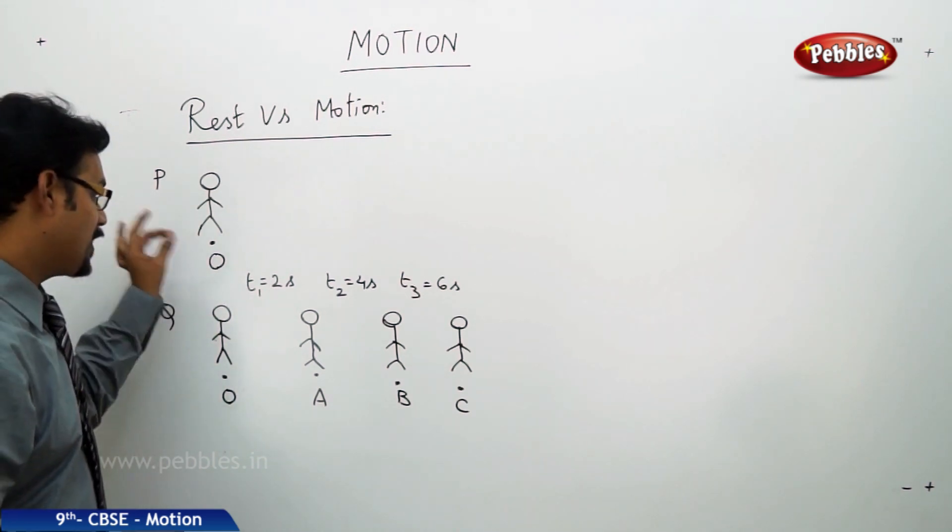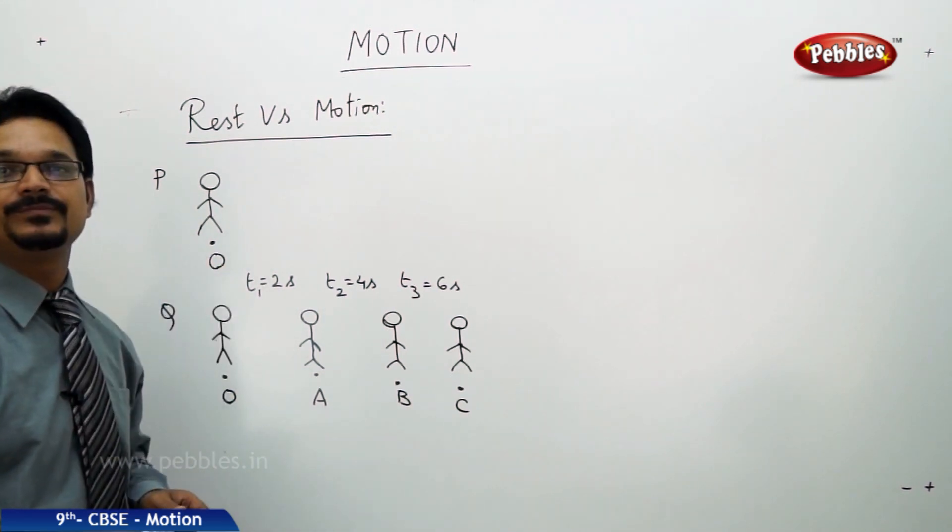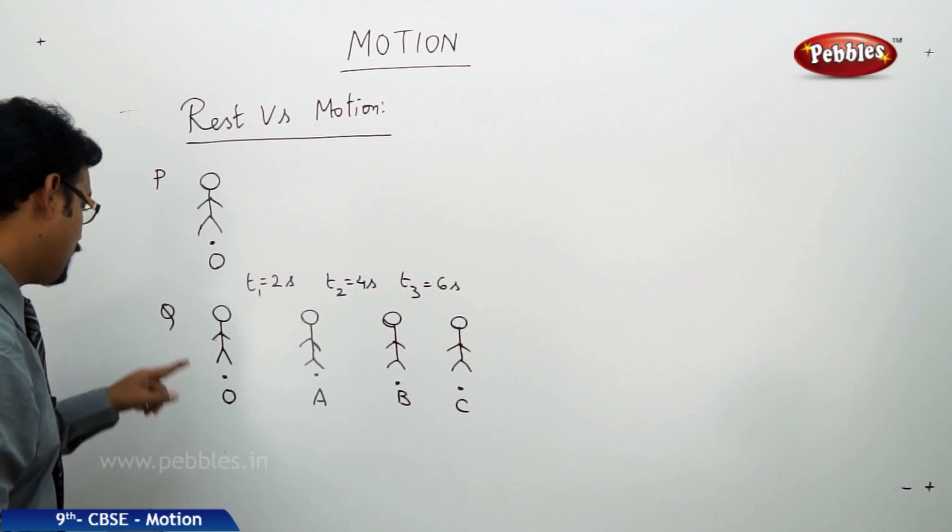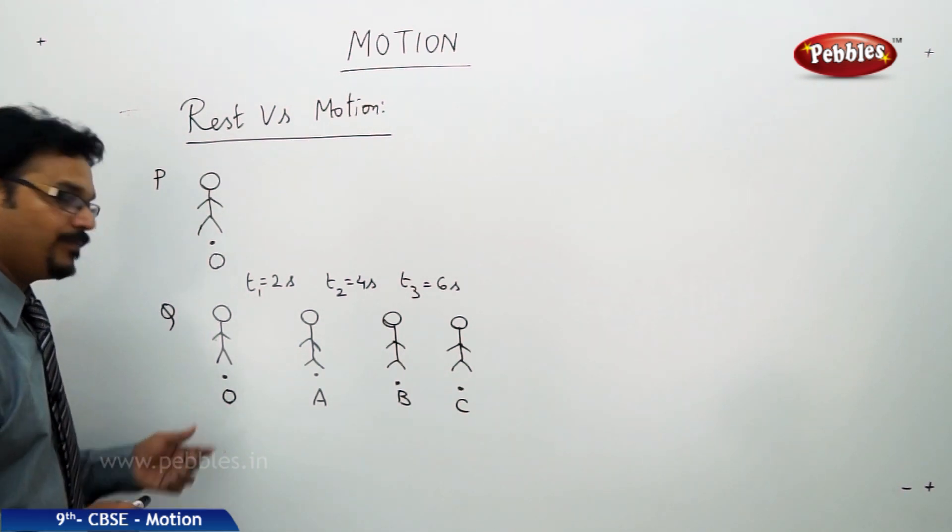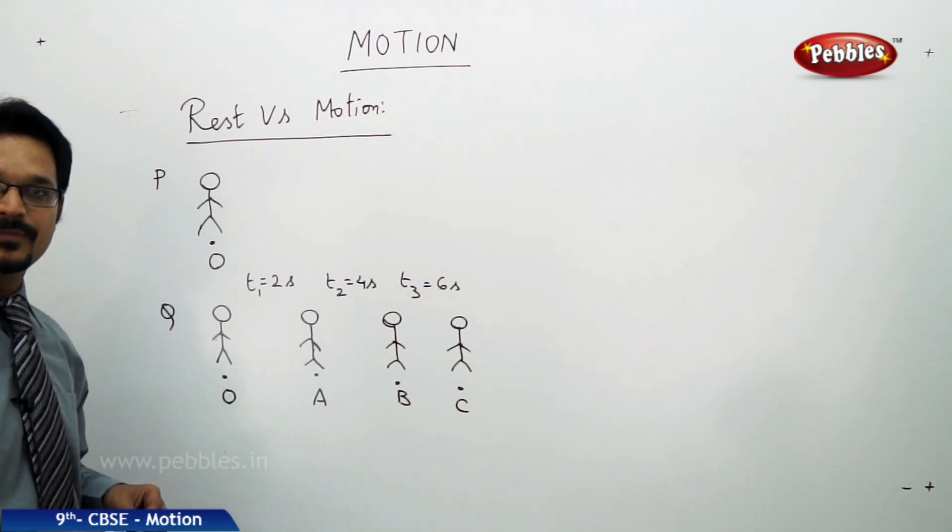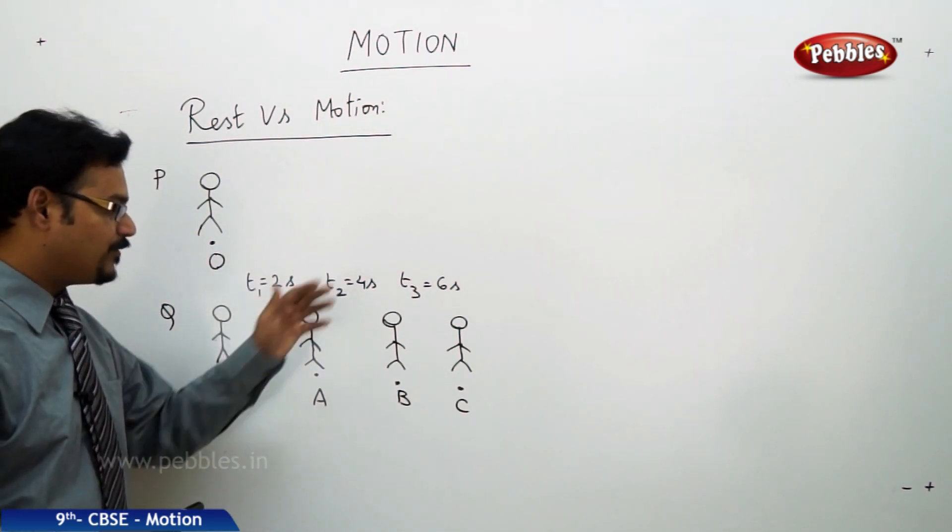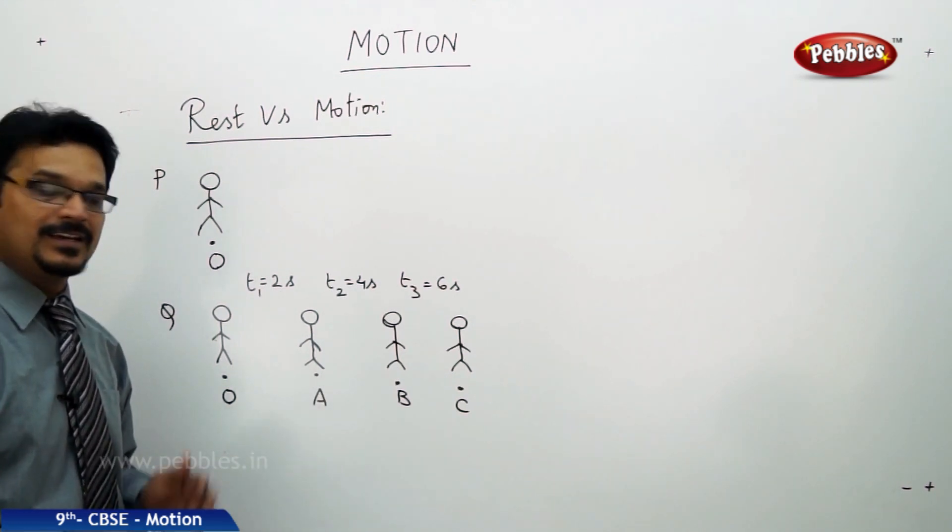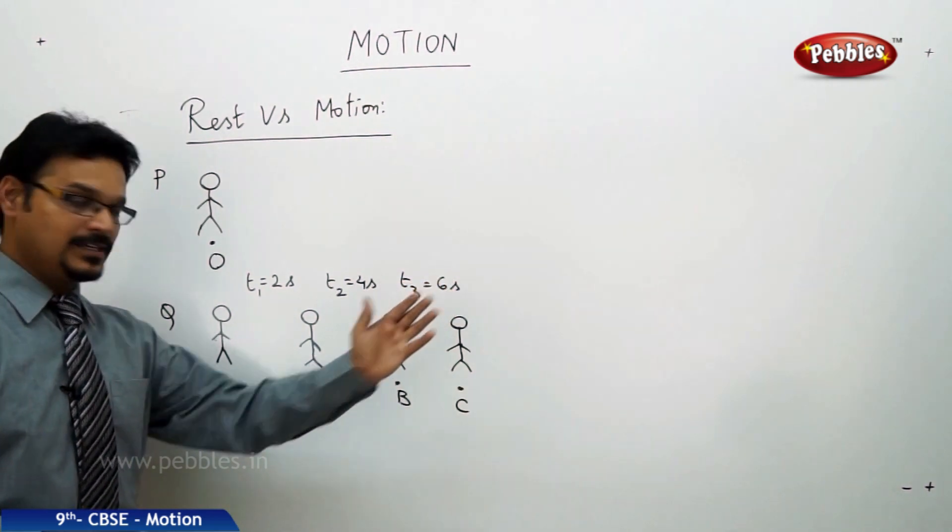Now see the person Q. The person Q is at O at time t equal to 0. After 2 seconds he is at A, after 4 seconds he is at B, after 6 seconds he is at C. So when the time is passing, he is changing his position. The position is changing, then we say that this person is in motion.